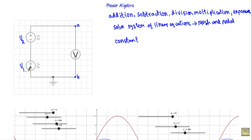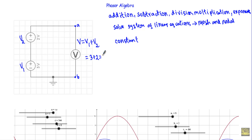For example, let's say I have a DC circuit where voltage source V1 of 3 volts and voltage source V2 of 2 volts are connected in series. If I am asked to calculate the voltmeter reading, the voltmeter reading V will be the simple algebraic sum: V1 plus V2 equals 3 plus 2, which equals 5 volts — a simple algebraic operation.